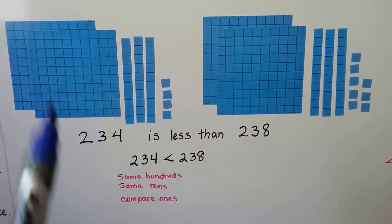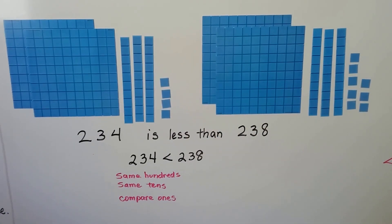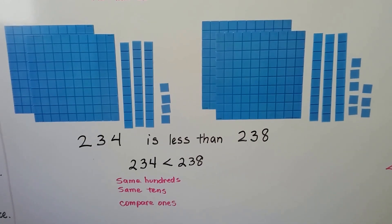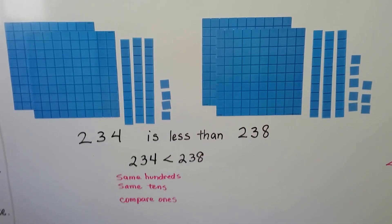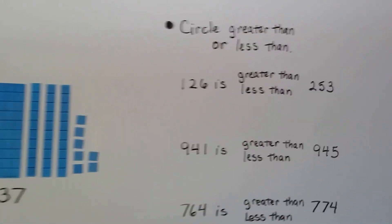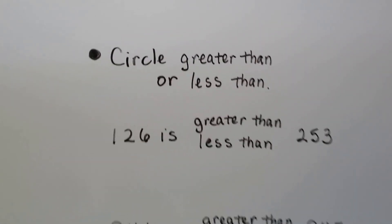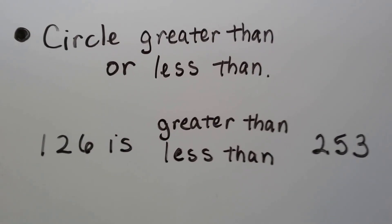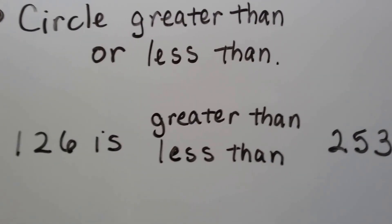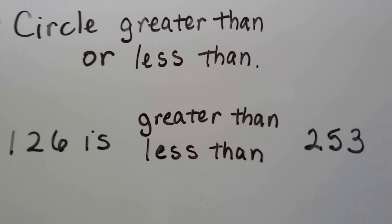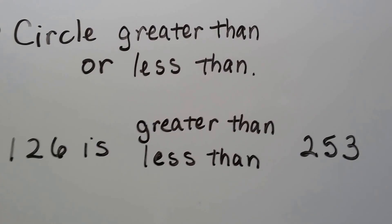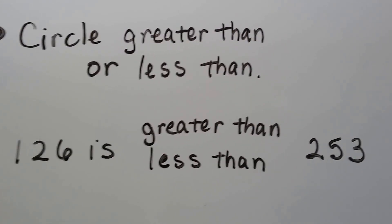We had to keep going to each place value until we found a way to compare them to find a difference. So let's see if we can do this. We need to circle greater than or less than. Is 126 greater than or less than 253?